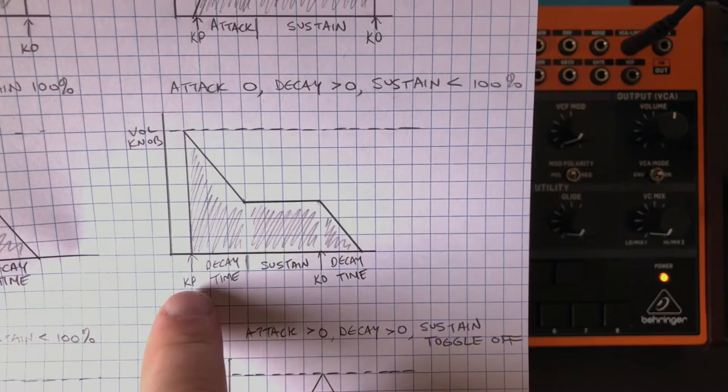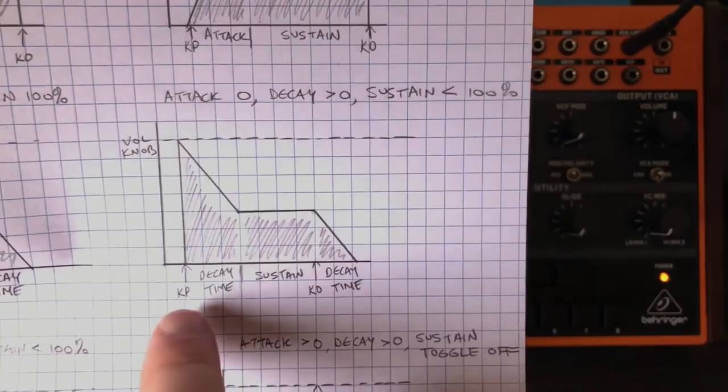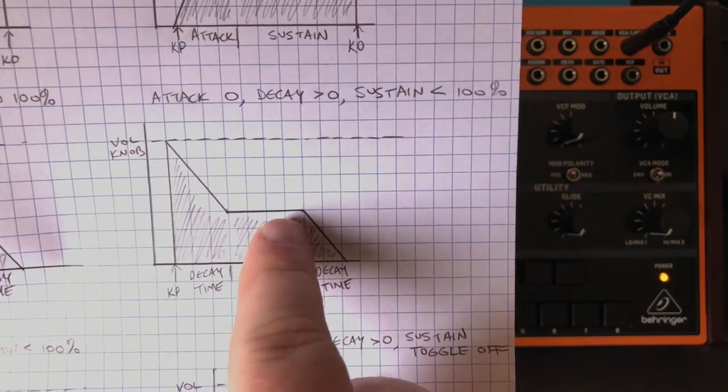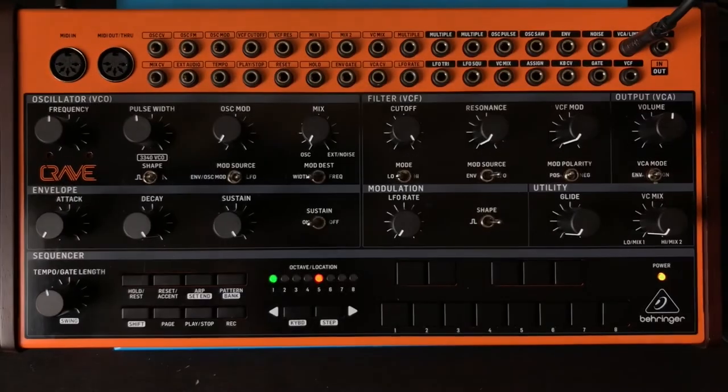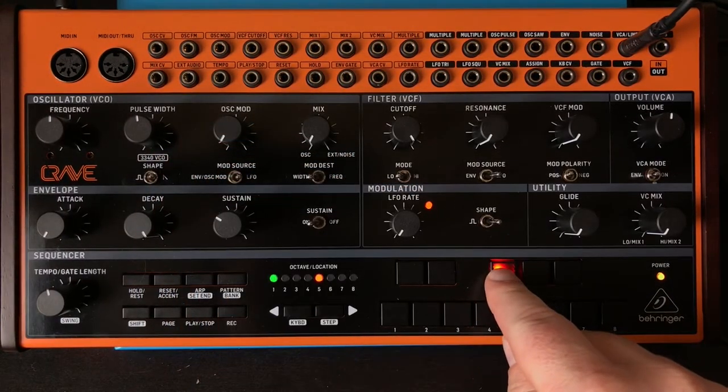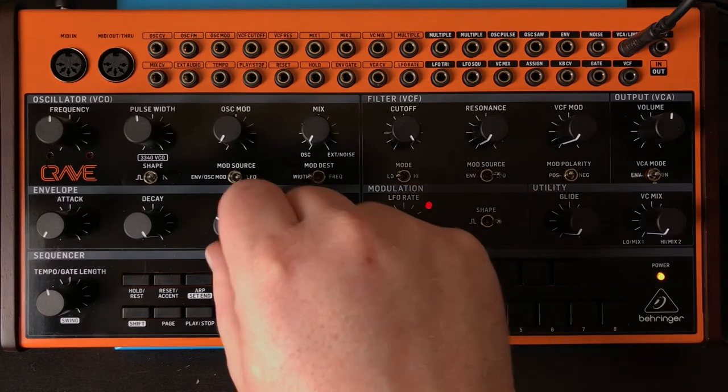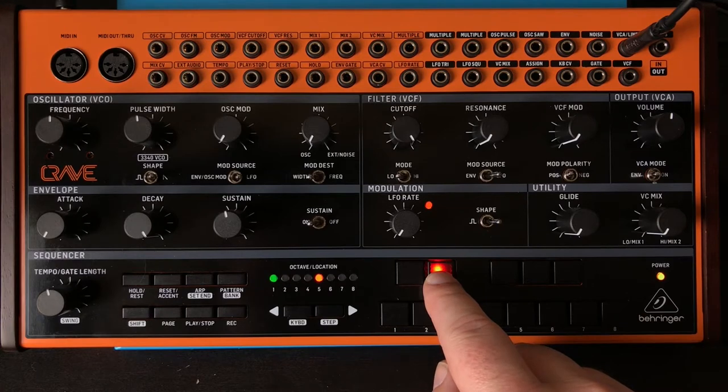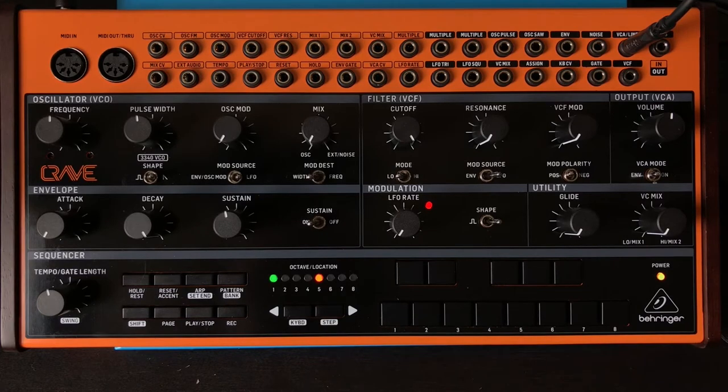Okay? So I'm going to press, I'm going to set my sustain to less than 100%. It will instantly shoot up to the max level, decay to the sustain level, and then decay to zero after I let go. I'll do that again. Instant, full volume, then it decays to the sustain volume, then when I let go, it decays to zero. Now it's sustaining, and then it decays.